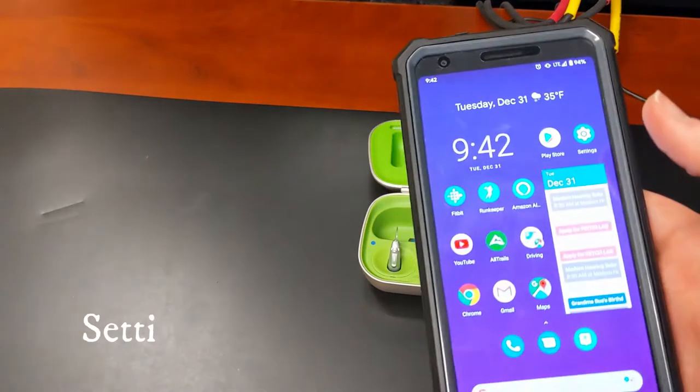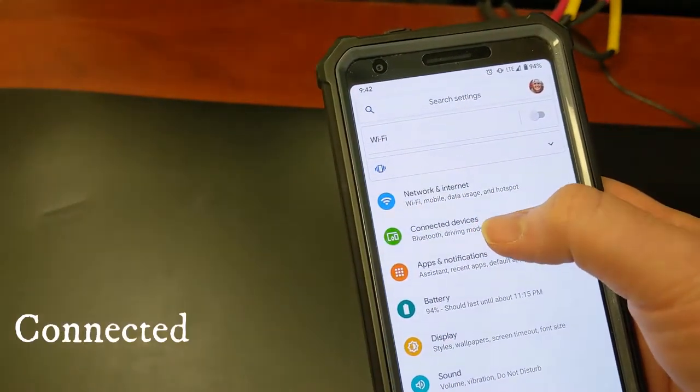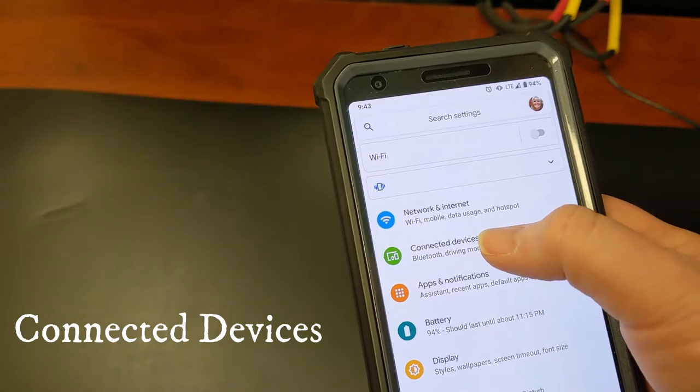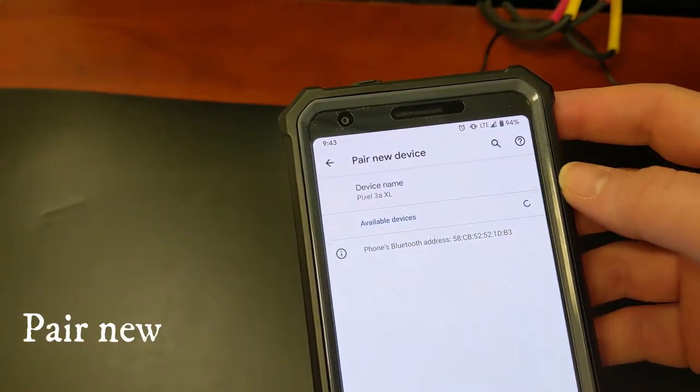To set this up we need to go to the settings on the phone and we'll go to connected devices and we'll tap pair new device up here at the top.